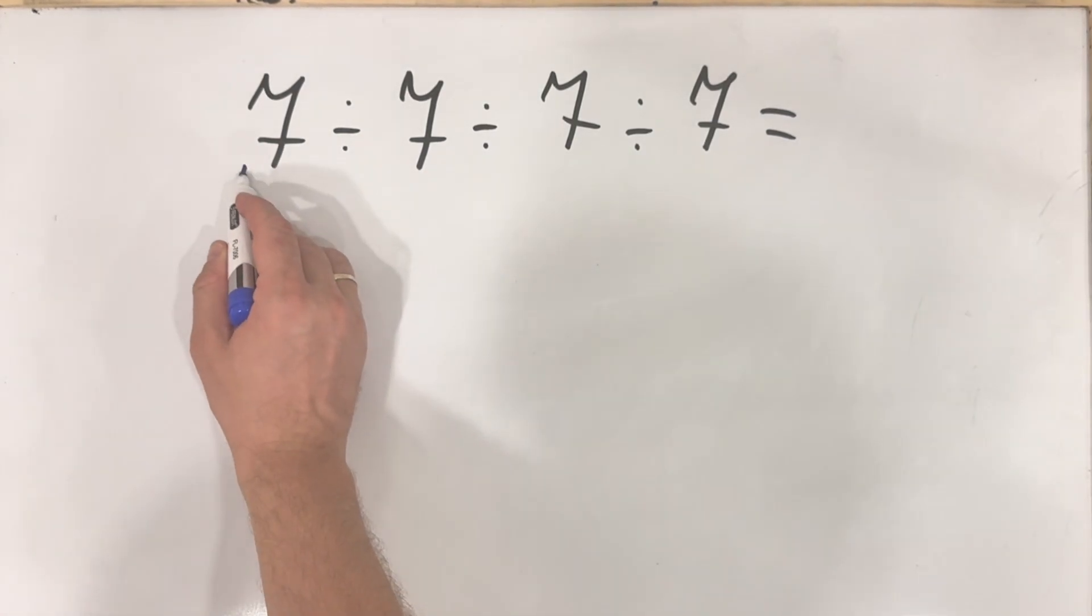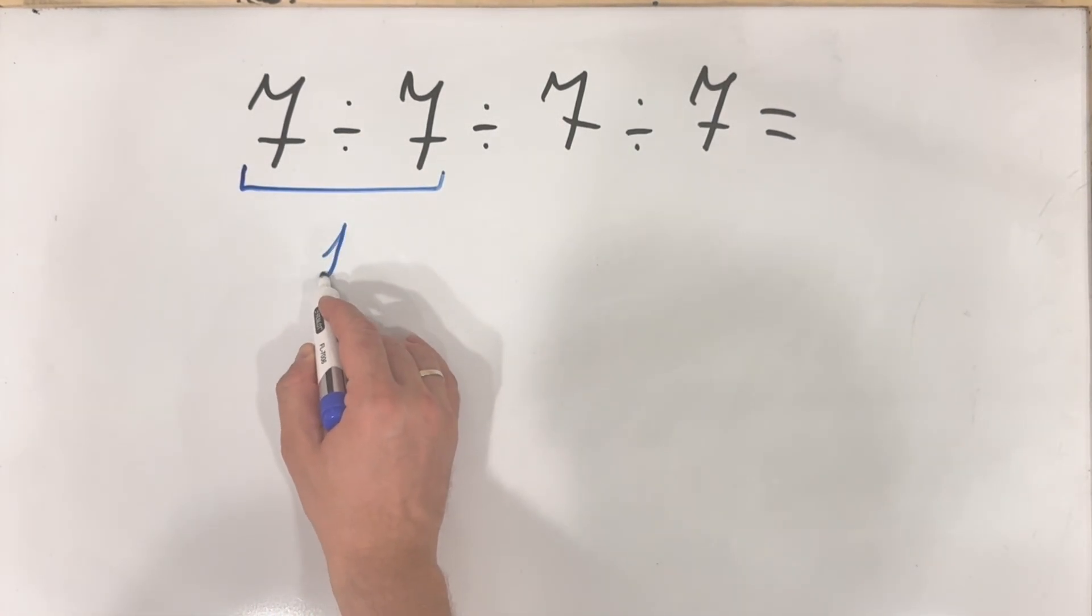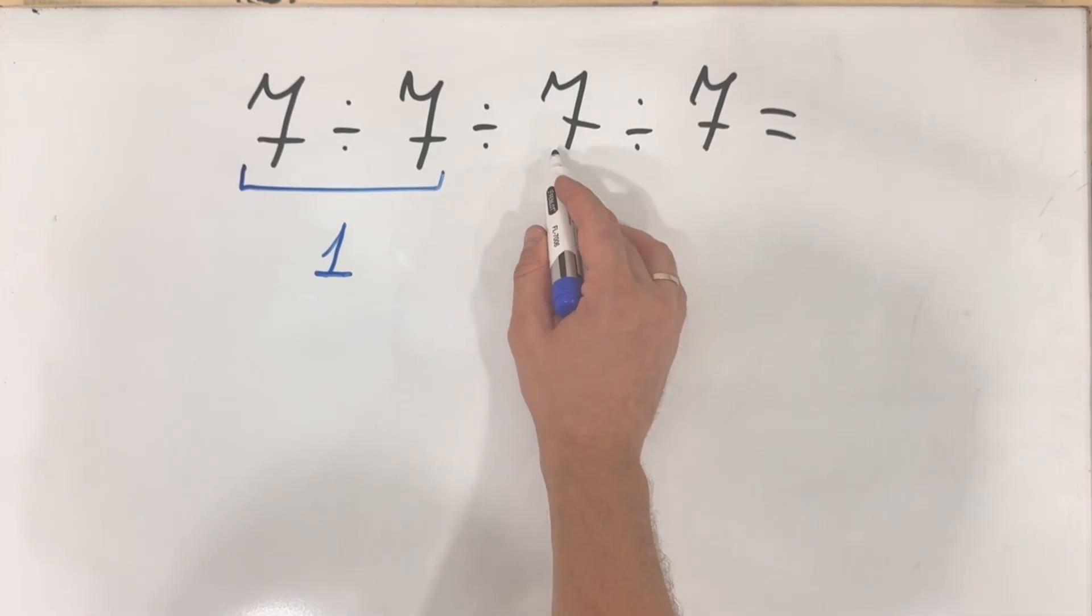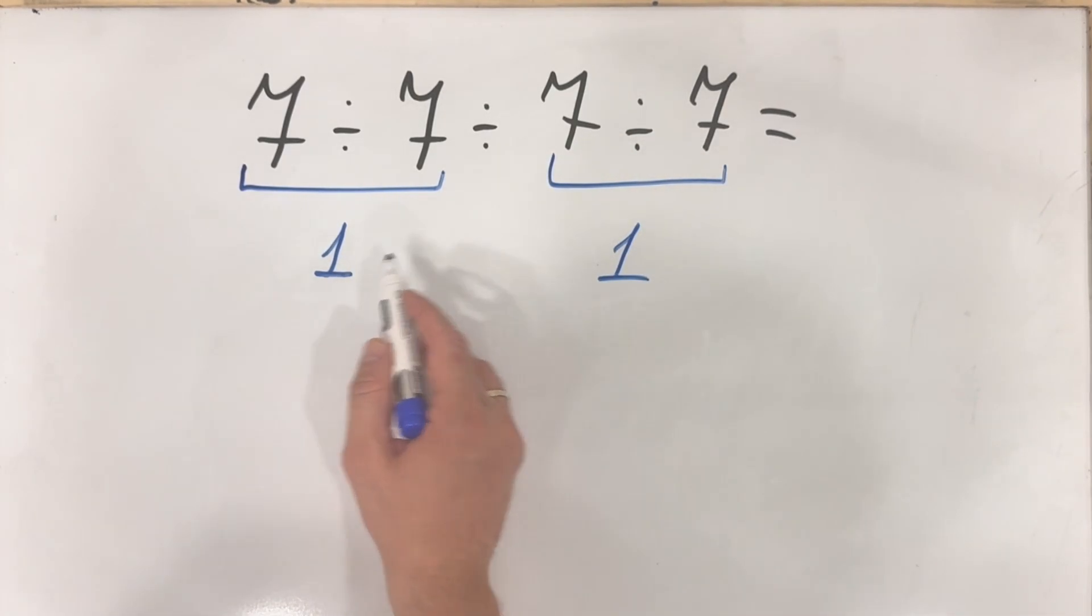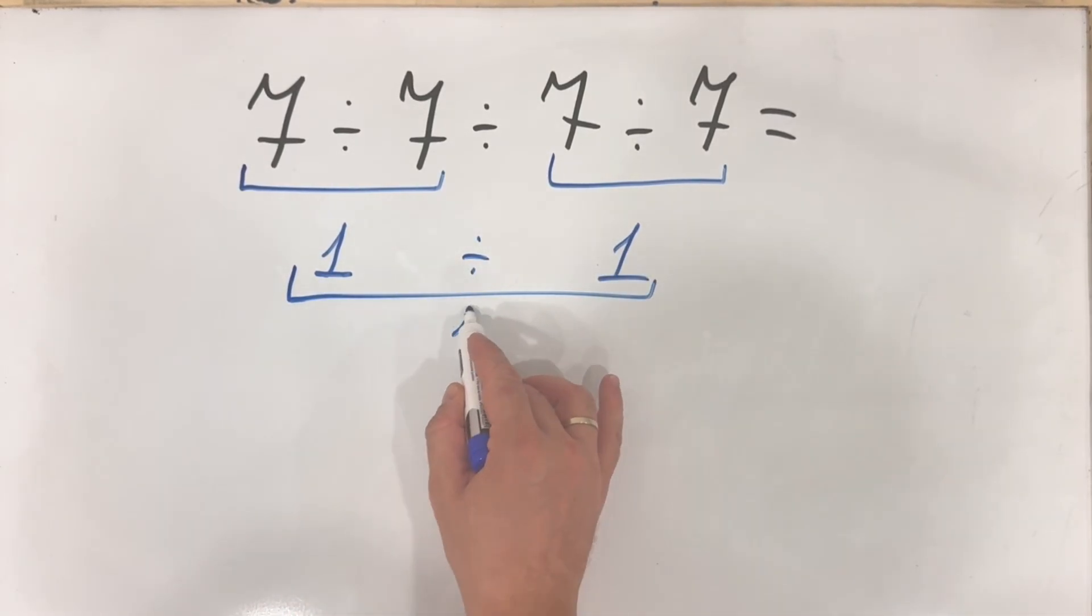7 divided by 7 equals 1, 7 divided by 7 equals 1 as well, 1 divided by 1 equals 1.